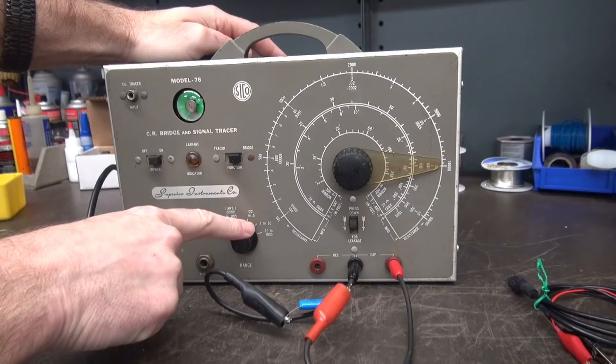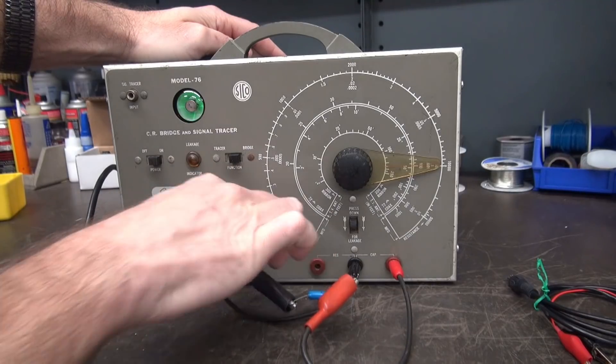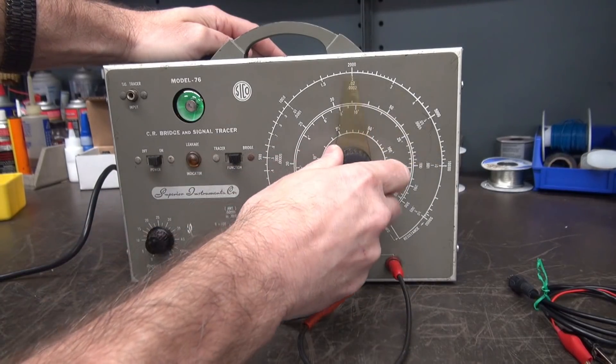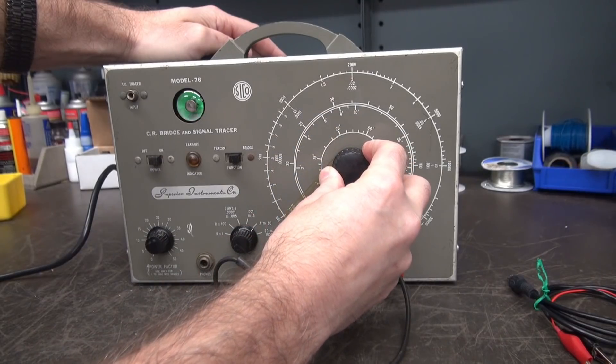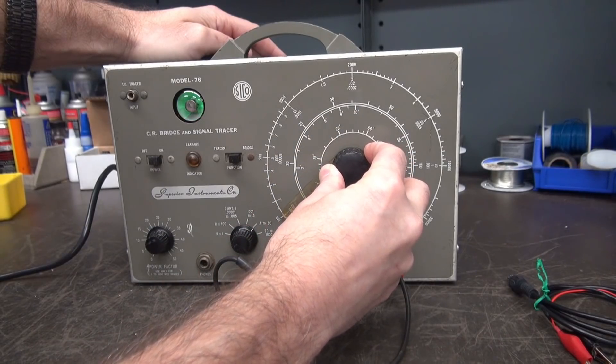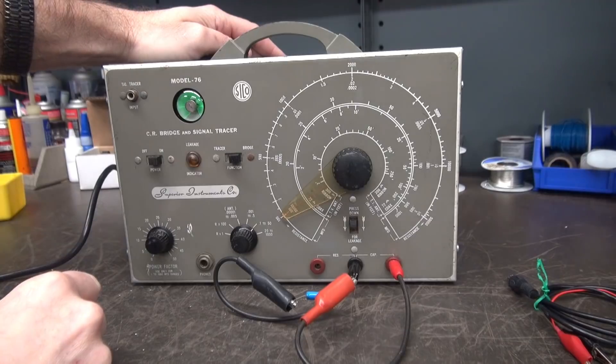So, the other range here is 0.1 to 50. So, if we go there, 0.1 is way over here. Let's see if it's there. Yep. Right on the money. Calibration looks good.